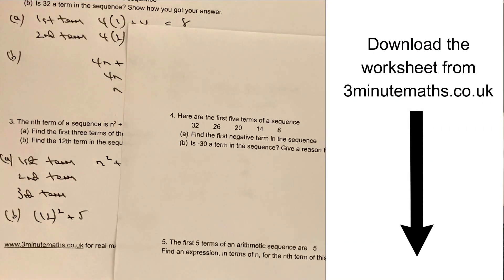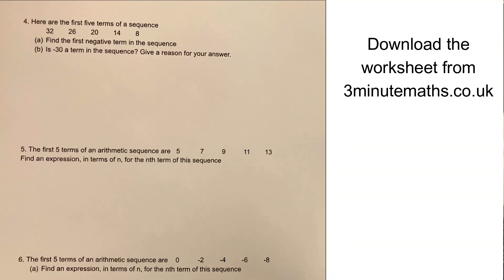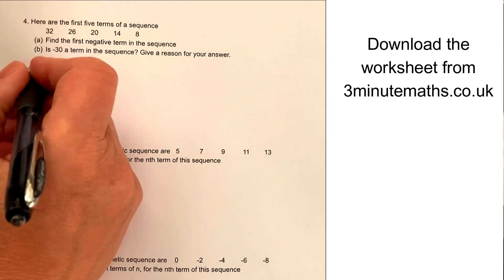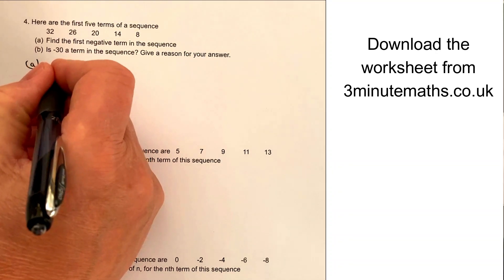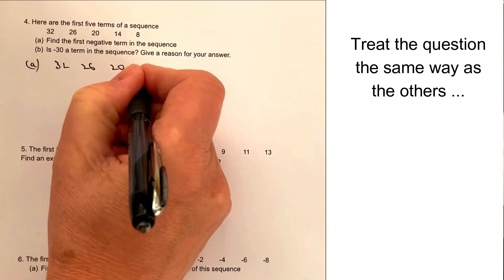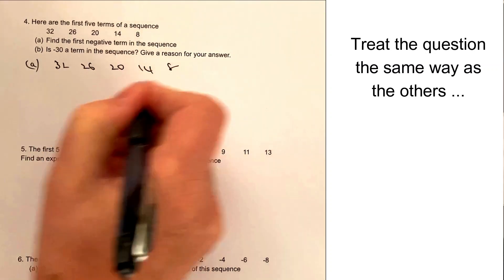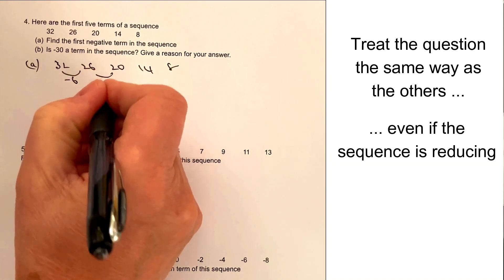Let's move on to question number 4. In question number 4, we've got the first five terms of the sequence, and we're going to find the first negative term in the sequence. Well, it should be fairly straightforward because we can actually write it all out. So we write it out as we've got 32, 26, 20, 14, and 8. Now, in each of those we're reducing by 6 each time.